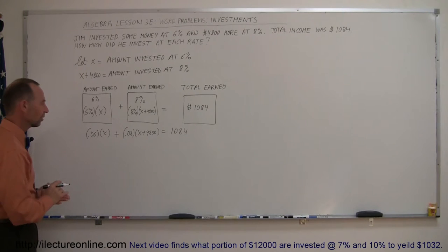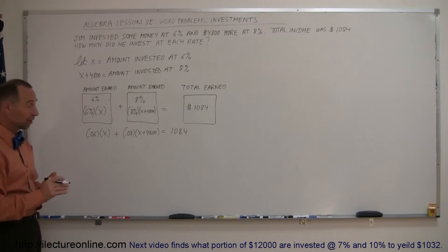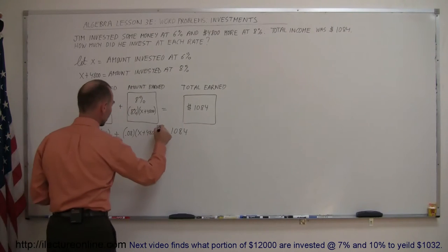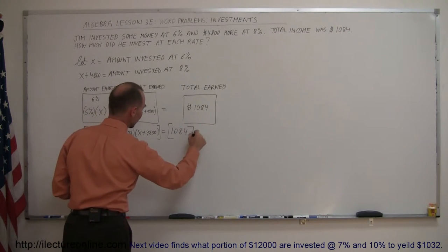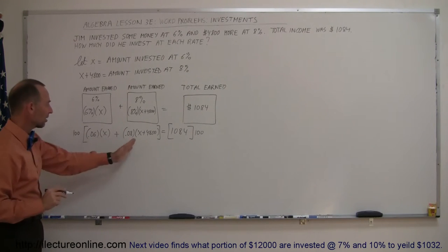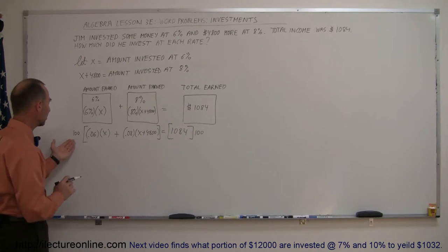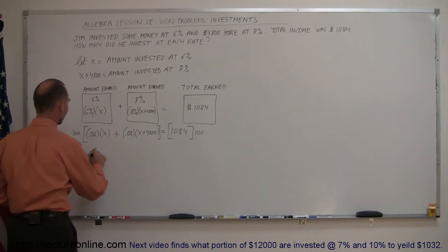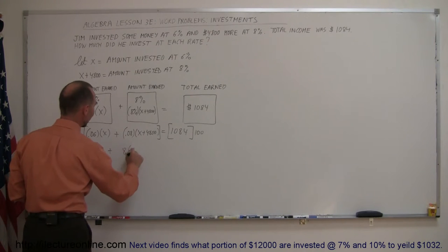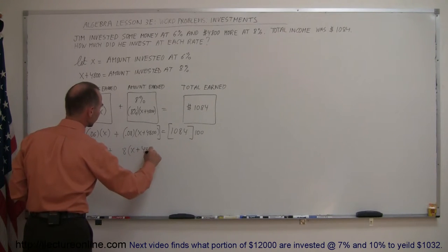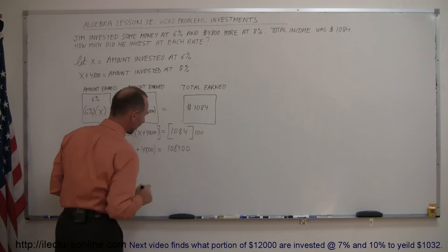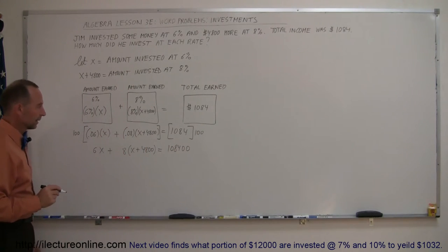So now we can solve this equation. The first thing we want to do is probably get rid of the decimal places, which means we're going to have to multiply times 100 to move this over by 2. That means we have to do the same to both sides. We'll multiply both the left and the right side of the equation by 100, that gets rid of the decimal places on the left side. So 100 times 0.06, that is 6 times x plus 100 times 0.08, that's 8 times x plus 4800 is equal to 100 times this which is 1084 with two more zeros added to it.